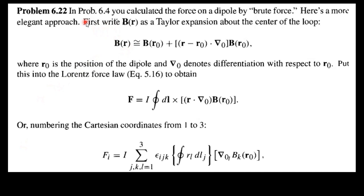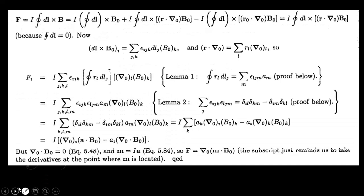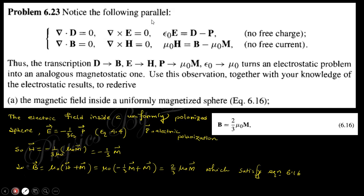In problem 6.4, you calculated the dipole expansion and the magnetic field expressed using the Levi-Civita symbol ε_{ijk} — this is a generalized form of the delta function. Try to solve this question using this expression. There is a problem with this notation; you need to understand this lemma and its proof to solve this question — sorry for the difficulty.